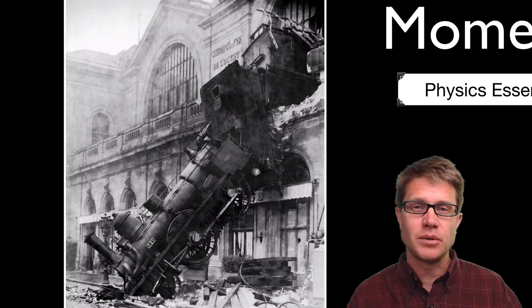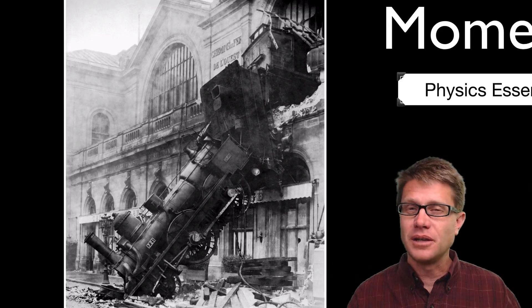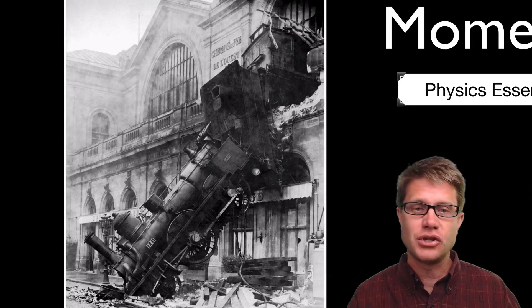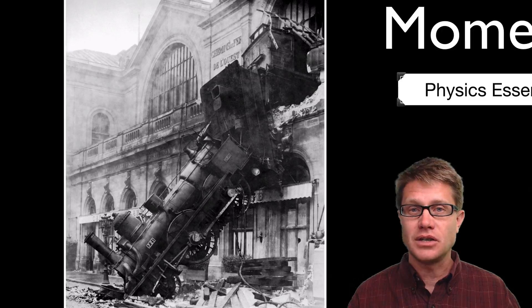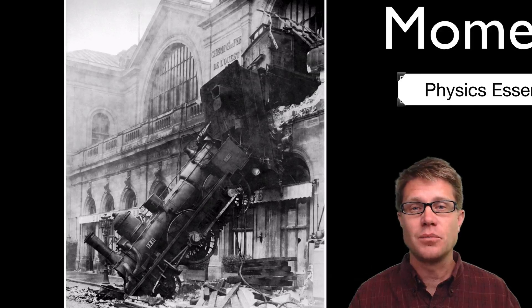In 1895 a train was headed towards Paris. They were a little bit behind schedule, didn't apply the brakes in time and it came shooting out through the train station. What was their problem? They had too much momentum.